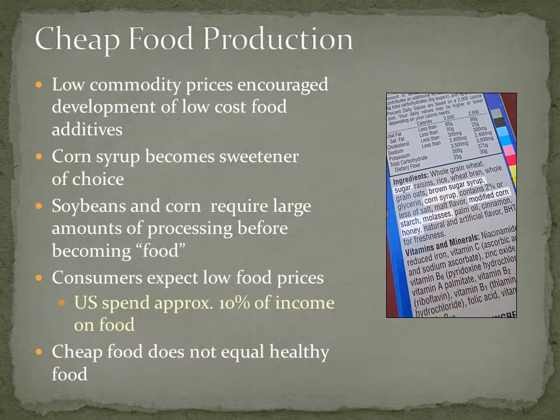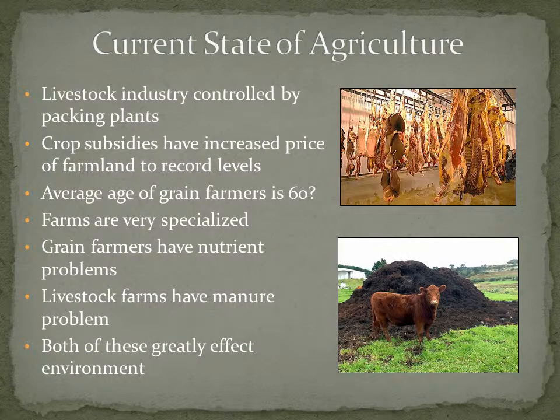The cheap food, low commodity prices, and increased development of low-cost food additives — corn sweetener is a good example, and most soda is sweetened by corn because of cheap corn prices. In the U.S. we spend approximately 10% of our income on food, which is one of the smallest percentages of any country in the world. But cheap food does not always equal healthy food, and I think that's part of our problem.